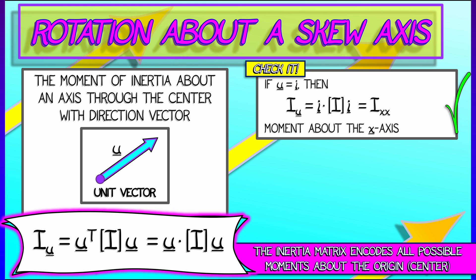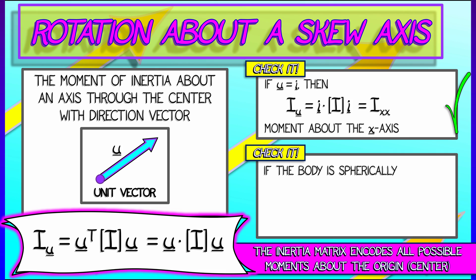But let's keep thinking. What happens if I had a round ball? Then the inertia matrix would just be a constant times the identity matrix because of all the symmetry, and then if I pick any unit vector u and I compute u dot i u, then what do I get?